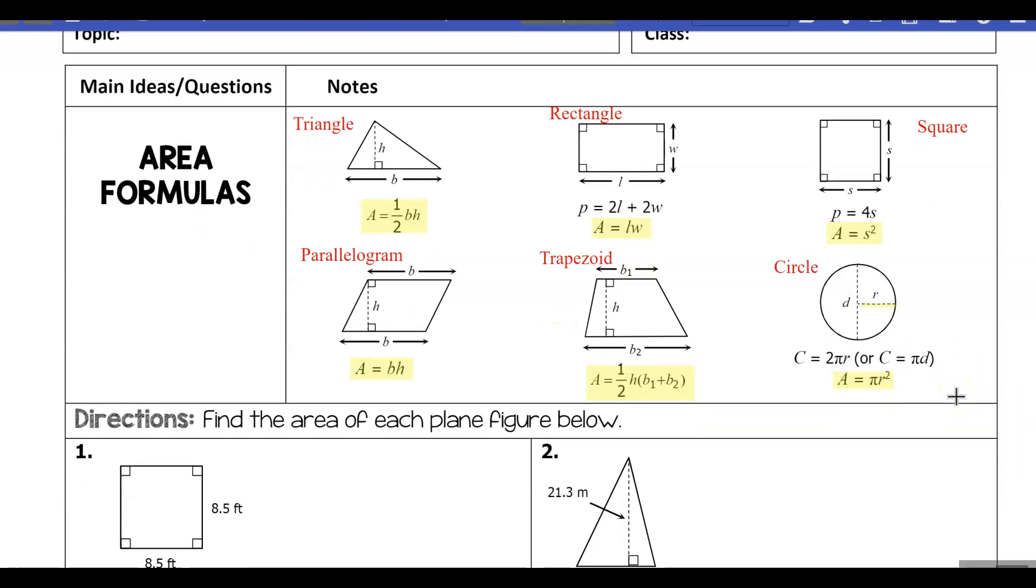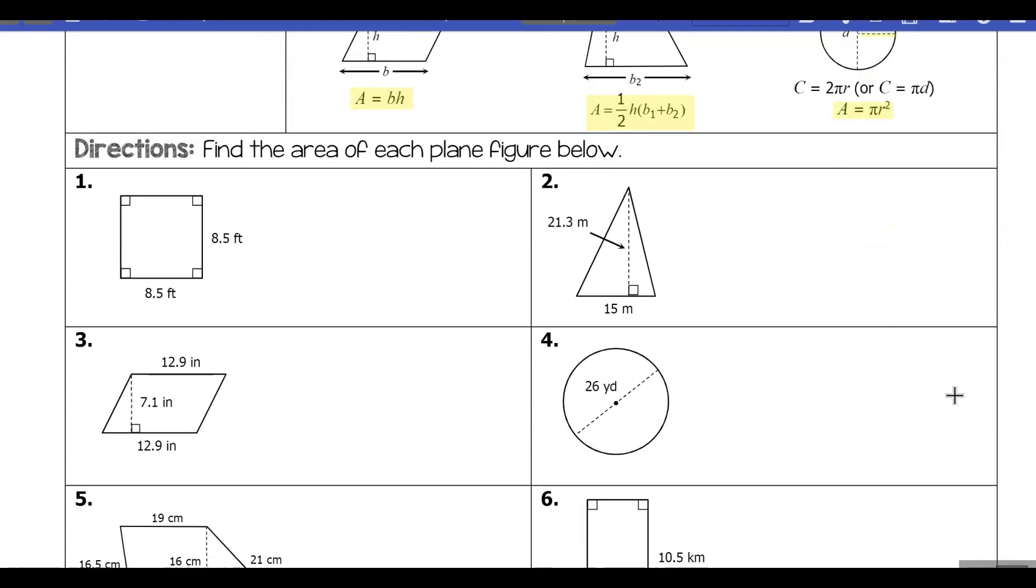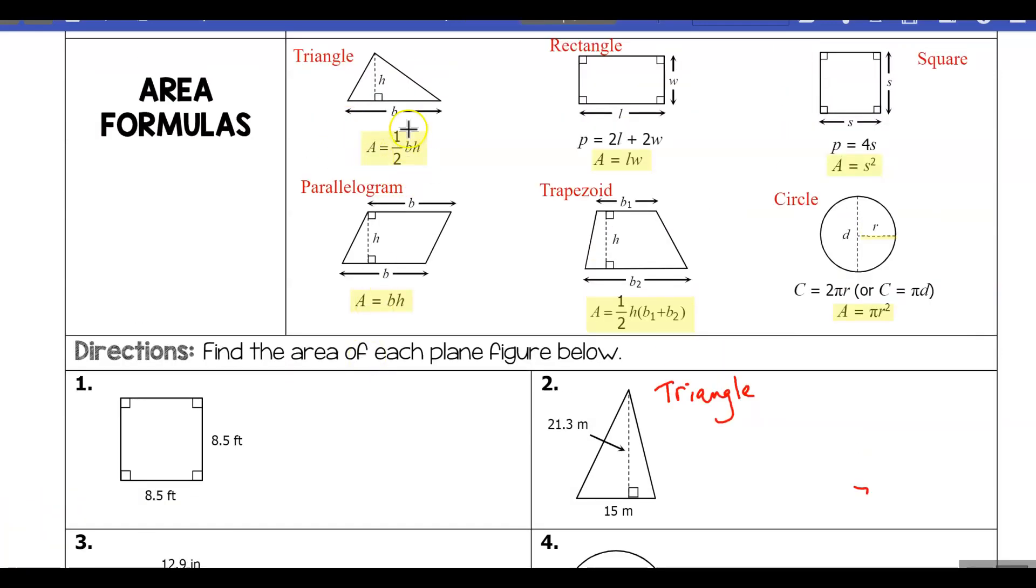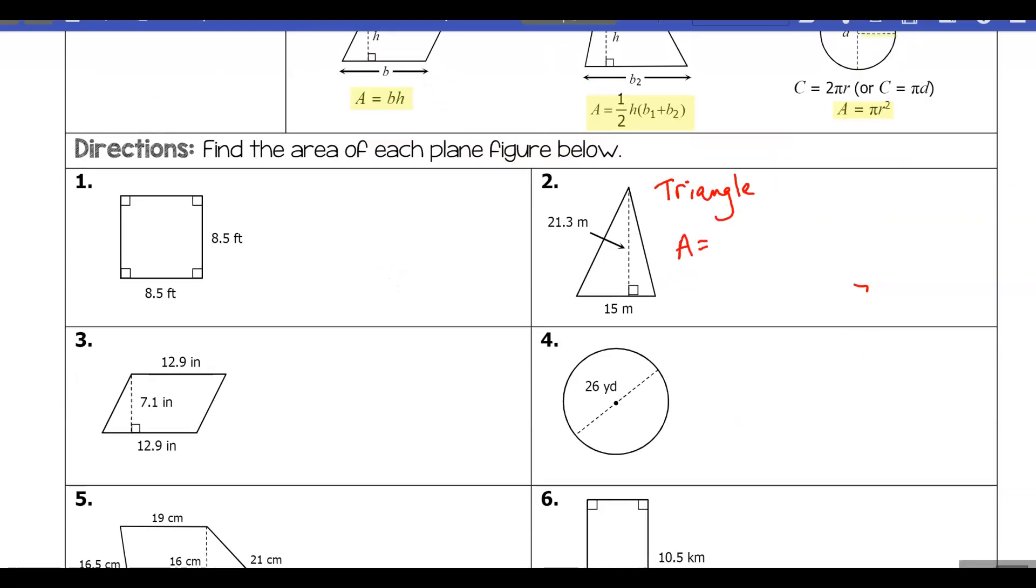Let's take a look at number two. The first thing we want to do is identify what type of figure - we can see this is a triangle. Then we want to write down the formula: area equals one half base times height. Then we're going to substitute in the base and the height from the picture. The base here is 15 and the height here is 21.3. If we plug this into our calculator we should get 159.75.